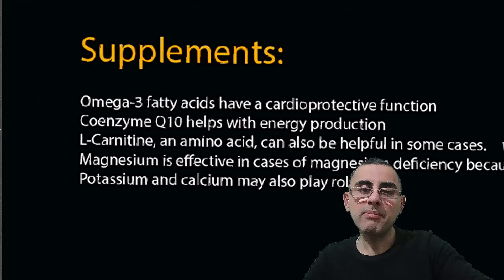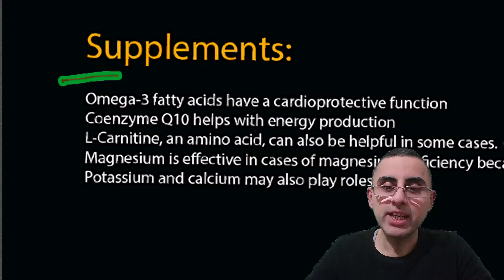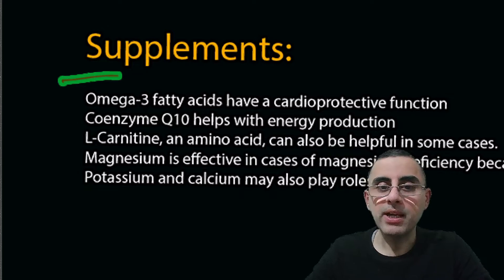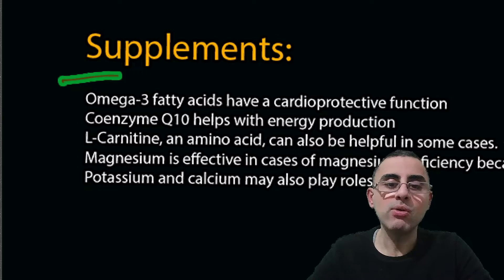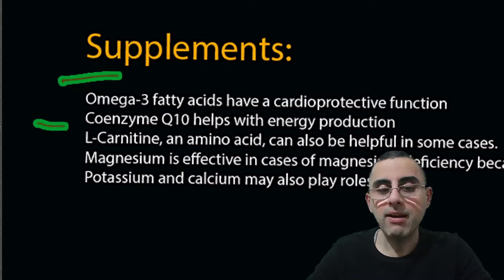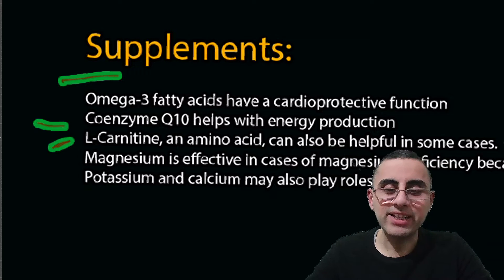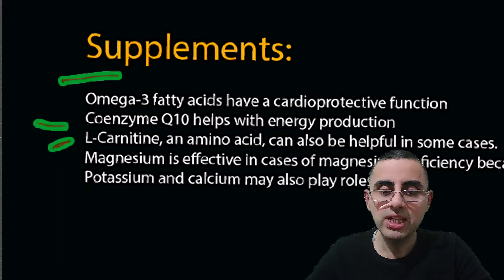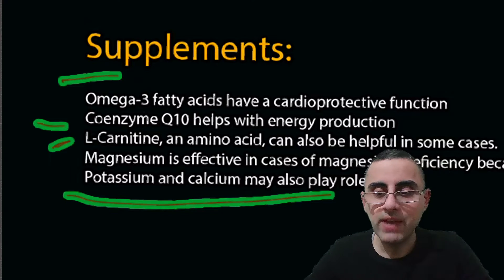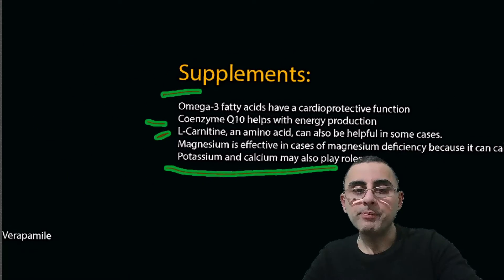Supplements that may help with bradycardia include: omega-3 fatty acids, which have cardio-protective functions and can modulate heart rate; coenzyme Q10, which supports energy production in cells and can improve heart rate; carnitine, an amino acid that helps with energy generation in heart cells; magnesium, which is effective when there is a deficiency; and potassium and calcium, which play important roles in electrical signal formation and transmission.